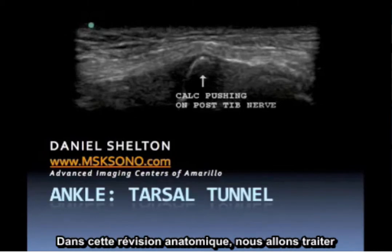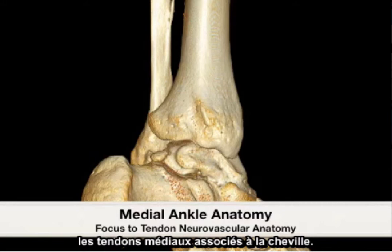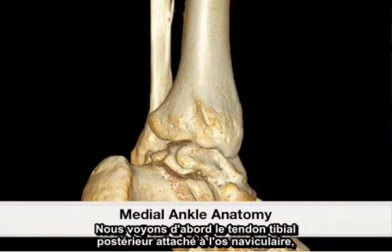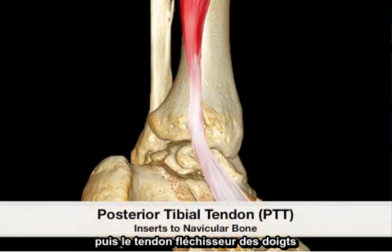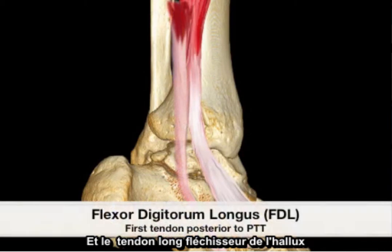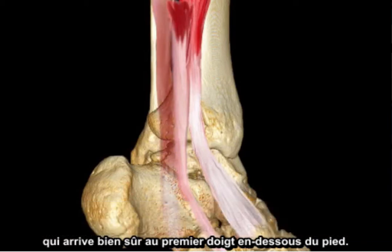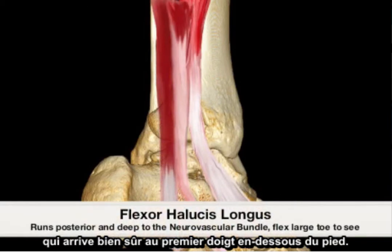In the anatomical review we will be covering the medial tendons identified with the ankle. First is the posterior tibial tendon attaching to the navicular, followed by the flexor digitorum tendon which courses to the plantar aspect of the foot, and the flexor hallucis longus tendon which also courses to the first digit underneath the foot.